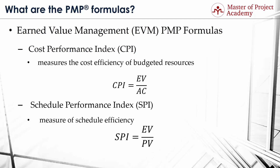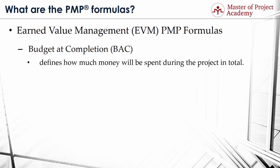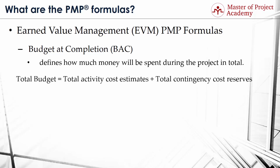PMP formula number 7: Budget at Completion or BAC. We determine BAC during the cost management activities, more specifically in the determine budget process of a project. BAC includes contingency reserves for activities and defines how much money will be spent during the project in total. Accordingly, its formula is: Total Budget equals total activity cost estimates plus total contingency cost reserves.